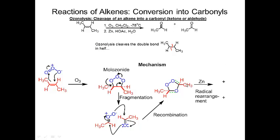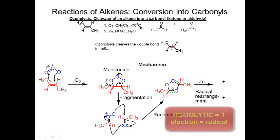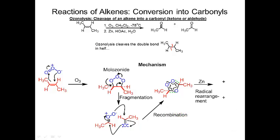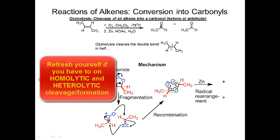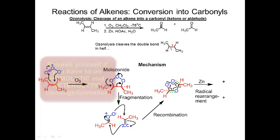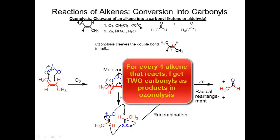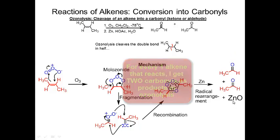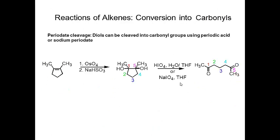Adding zinc drives homolytic cleavage: one electron comes here, one electron here, one electron here — that puts the pi bond here. And then one electron from here goes here, one electron from here goes here — that puts the pi bond there. An oxygen radical leaves and combines with zinc. The products are one carbonyl, the other carbonyl, and zinc oxide.